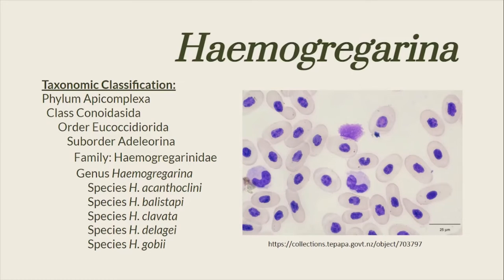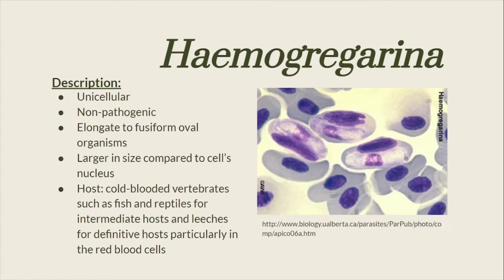Here is the taxonomic classification for the genus Hemogregarina. Hemogregarina are unicellular, non-pathogenic, and elongate to fusiform oval organisms. They are larger in size compared to the cell's nucleus. Their usual hosts are cold-blooded vertebrates such as fish and reptiles for intermediate hosts, and leeches for definitive hosts, particularly in their red blood cells.